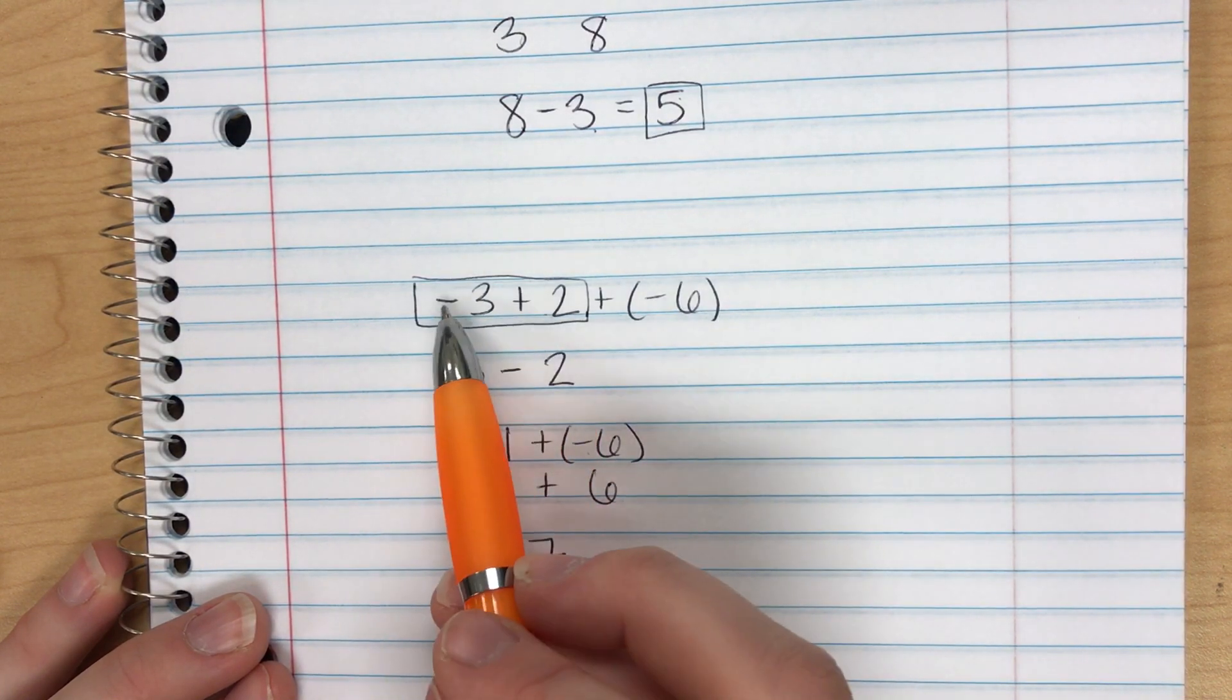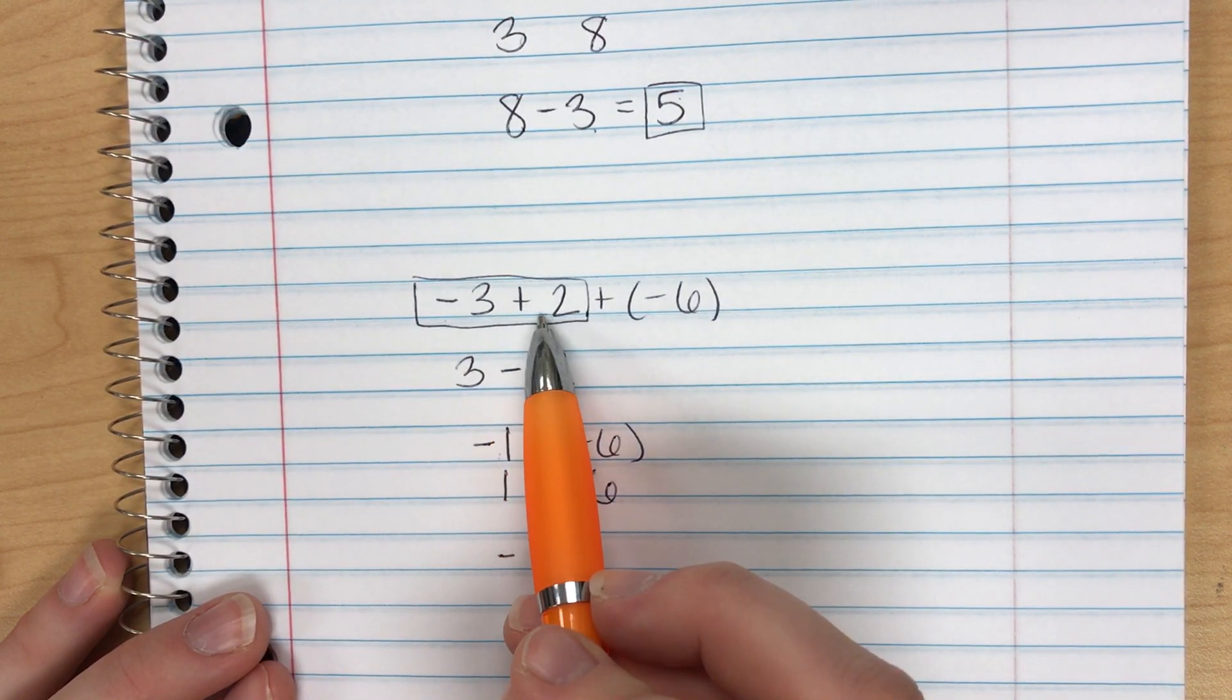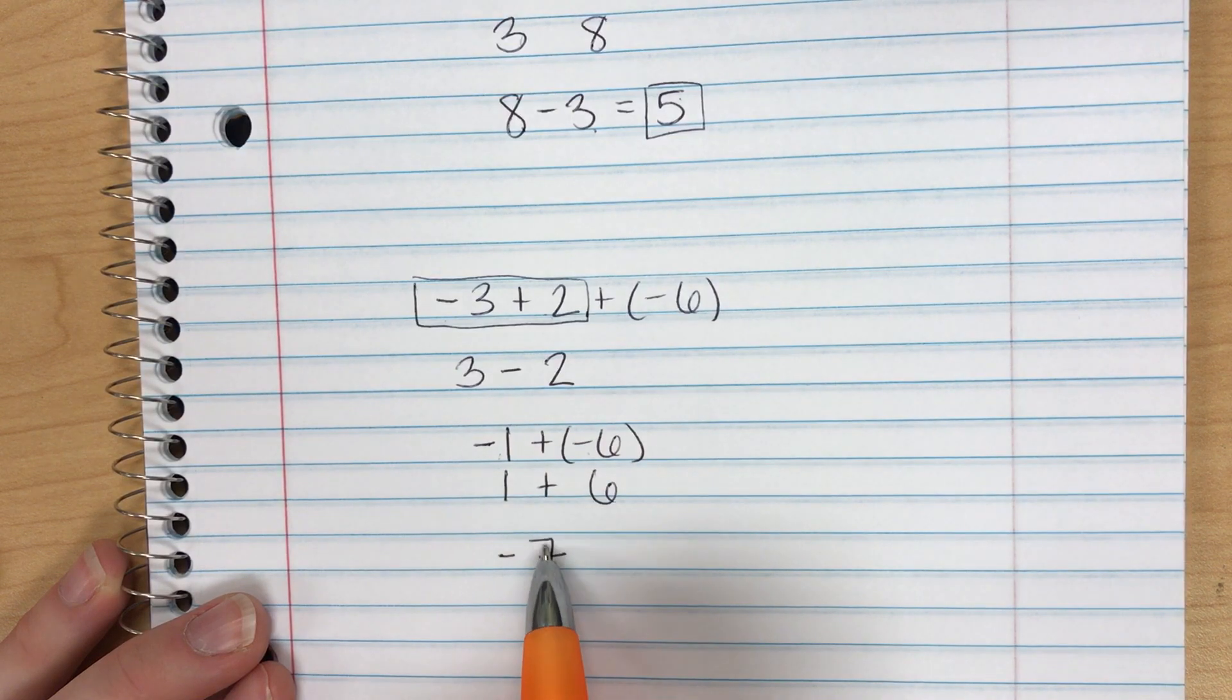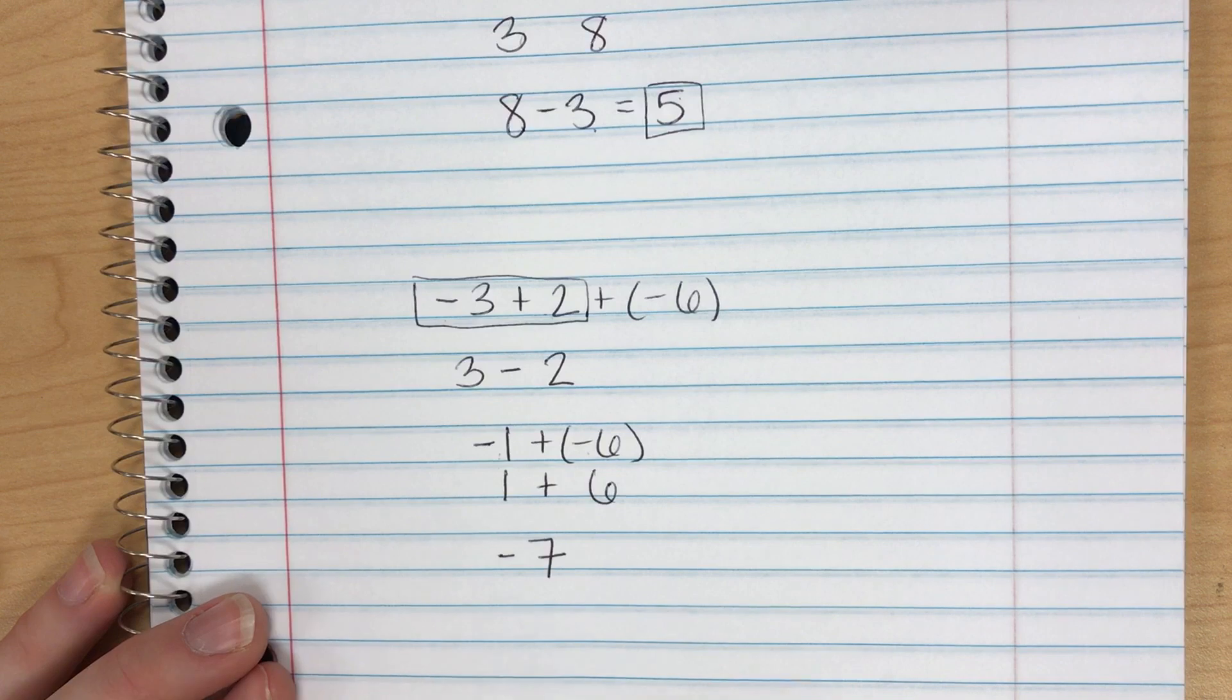I look back at my problem. Negative 3 plus 2 plus negative 6 equals negative 7. And that's adding integers. Have a great day K's crew!